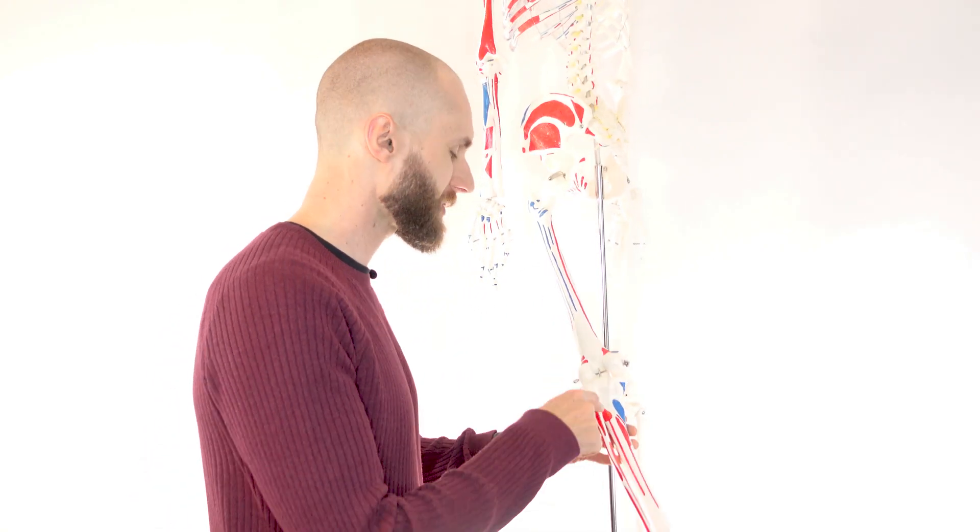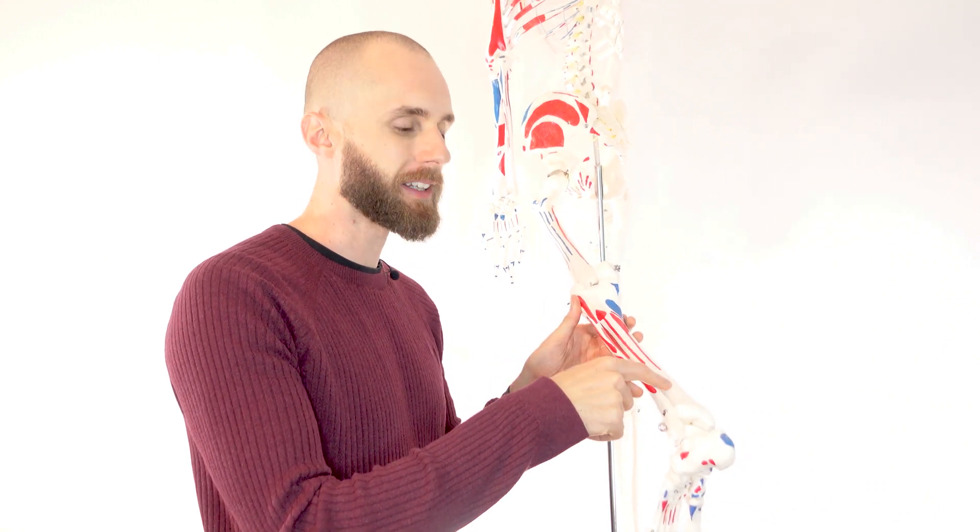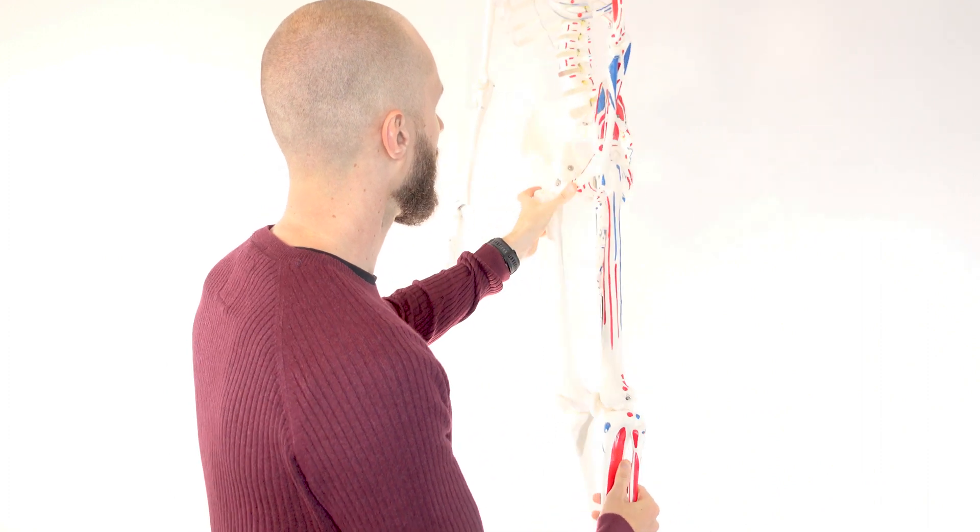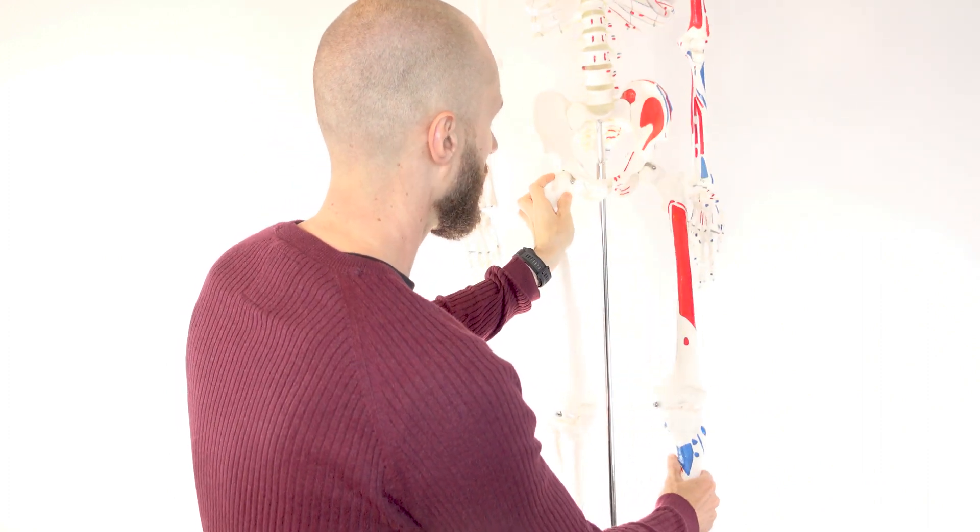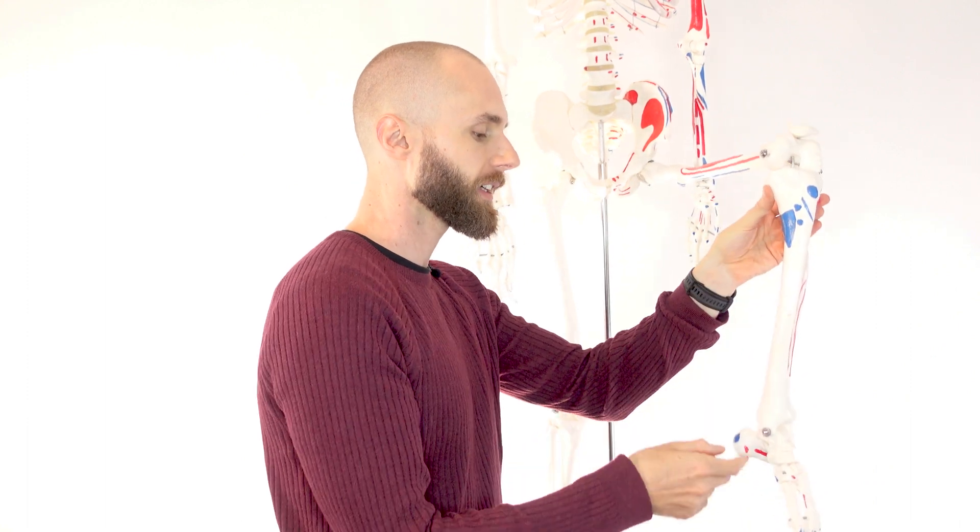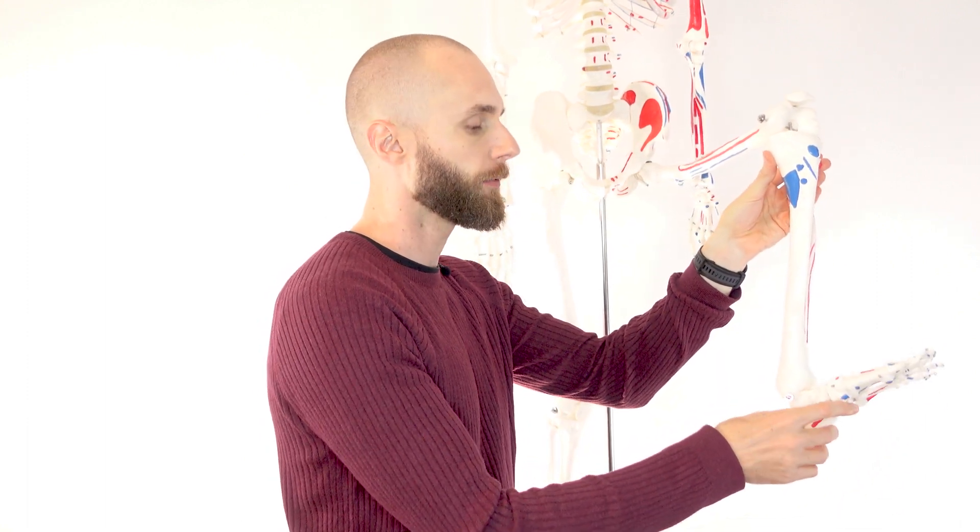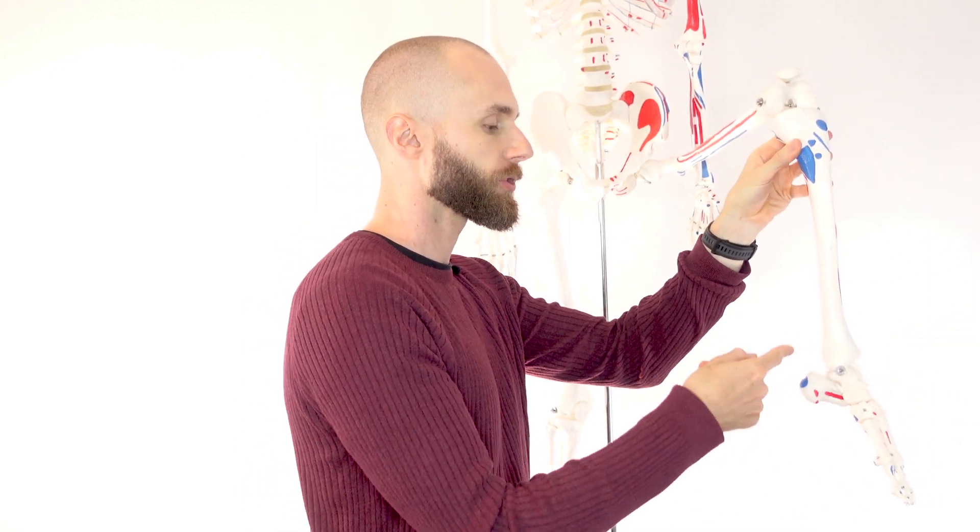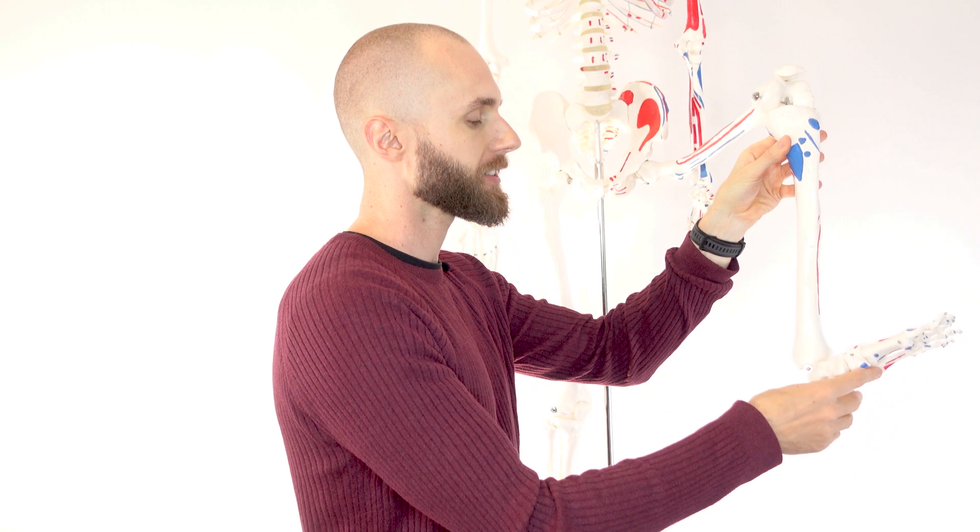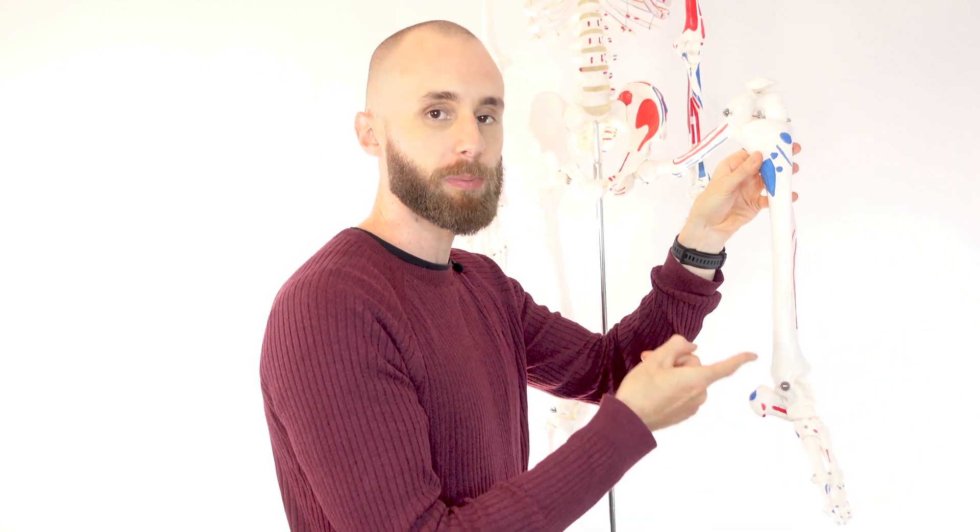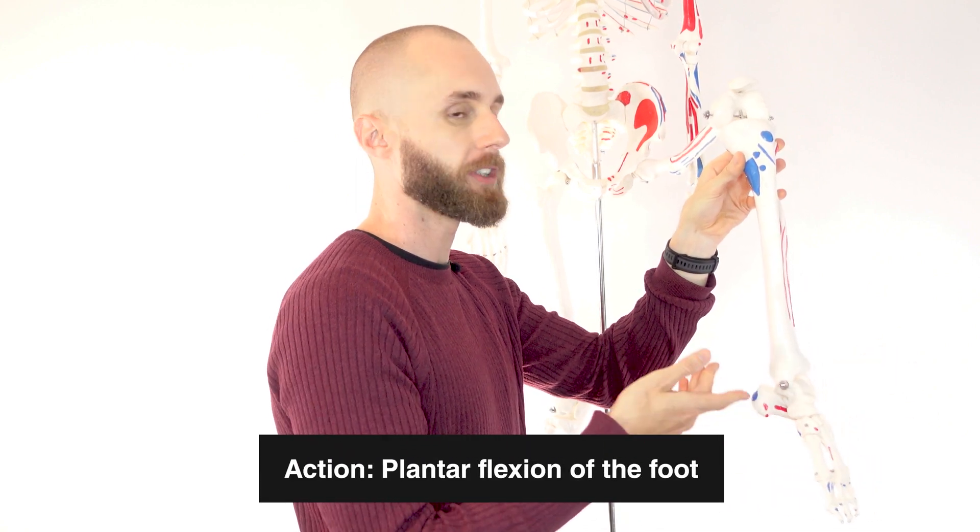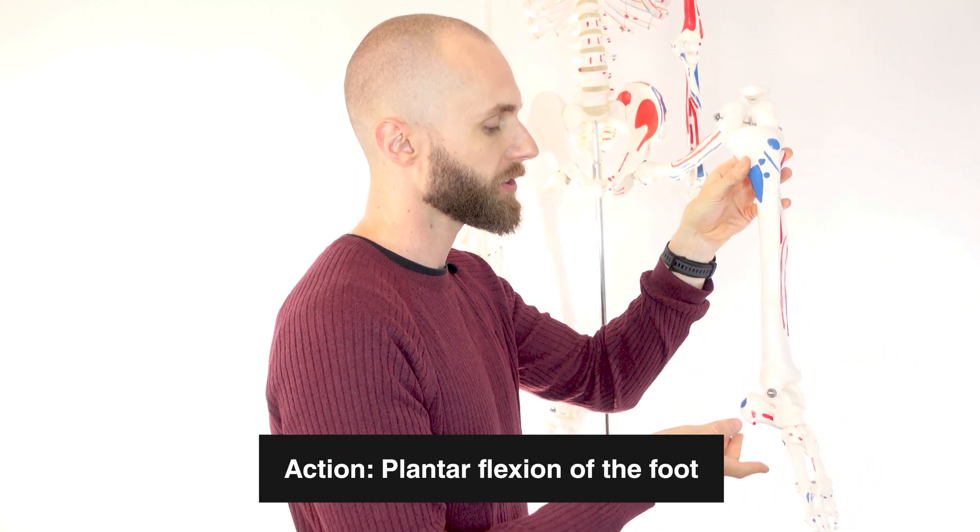So let's take a look at the actions next. We've got the tibialis posterior coming down the posterior of the lower leg here and crossing over the ankle joint, so its actions are going to occur at the ankle joint itself. And because it's connecting onto the posterior of the leg and the insertions are underneath the foot, when the ankle joint's flexed like that, it's going to pull the foot towards the posterior of the leg, and that extension of the ankle joint is known as plantar flexion of the foot. So plantar flexion of the foot is our first action of the tibialis posterior muscle.